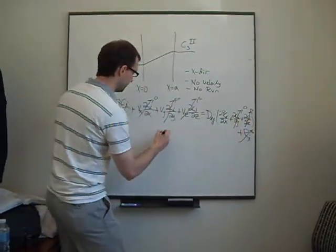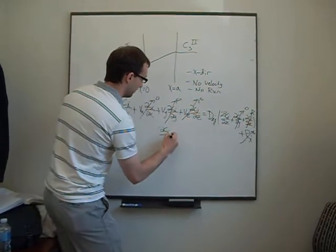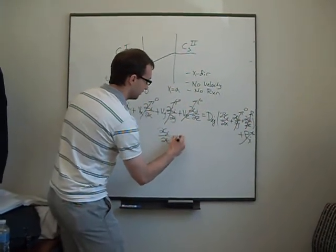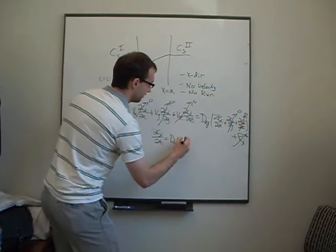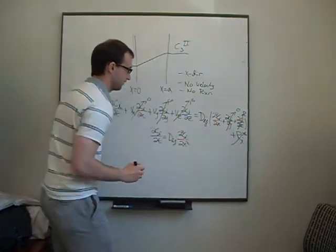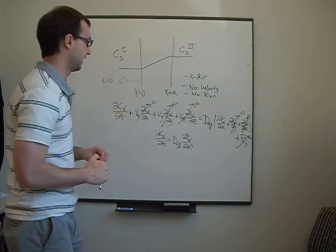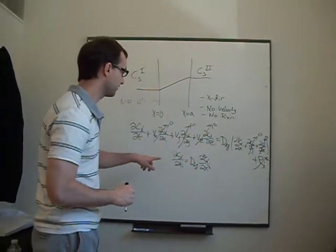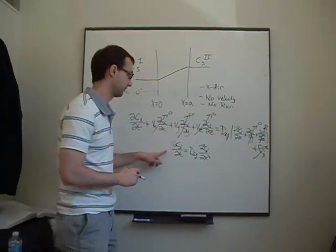So the equation is just simply dci dt equals dij d2ci dx2. So Fick's second law without the reaction term. So this is the differential equation that they are asking for in part A.